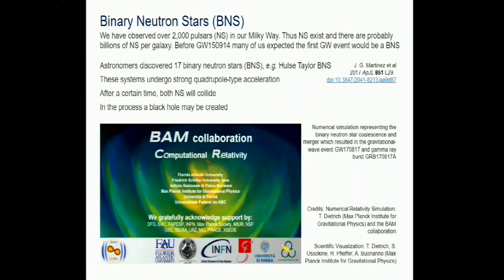Neutron stars are very close in size to black holes - slightly bigger - and it is remarkable why: QCD is fighting against the collapse, and for some reason you get an object close to the size of a black hole. These calculations are done largely in Europe. In addition to the normal merging, you must take all matter effects into account, so on top of the merger you also get tidal effects in neutron stars that get imprinted on the gravitational waves.